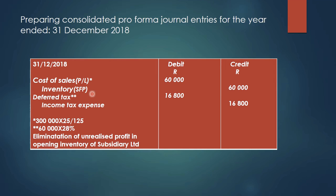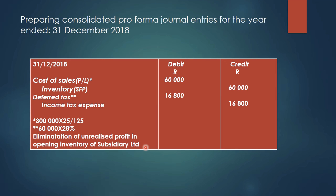The transaction is subject to tax. We assumed a tax rate of 28 percent, so we tax the unrealized profit, which gives us 16,800. We debit Deferred Tax and credit Income Tax Expense with 16,800. This is known as the elimination of unrealized profit in the opening inventory of the subsidiary — it's unrealized because the transaction occurred within the group. The profit would only be realized profit if the inventory were sold outside the group.